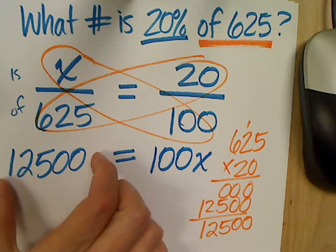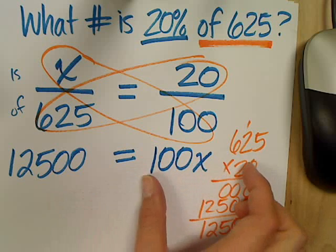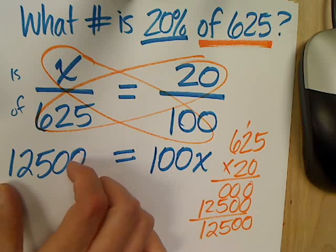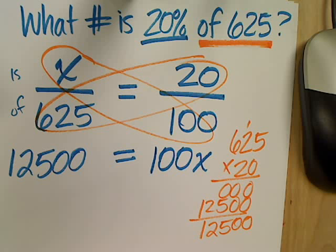So, now remember, if my 12,500 were on this side and my 100X were on that side, that's okay. You'd still get the same answer. Oh, you're still dividing.